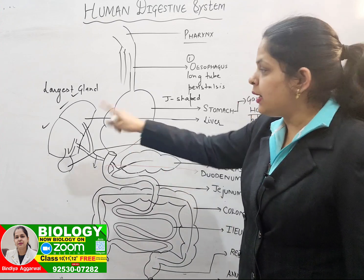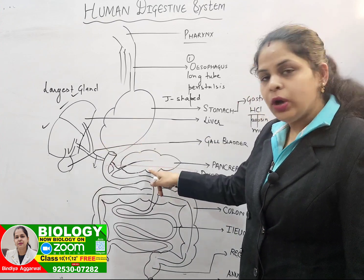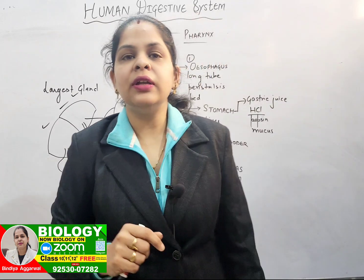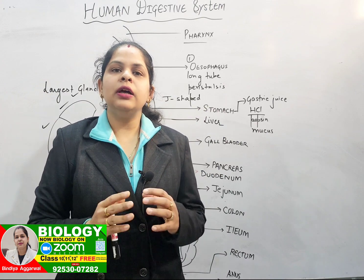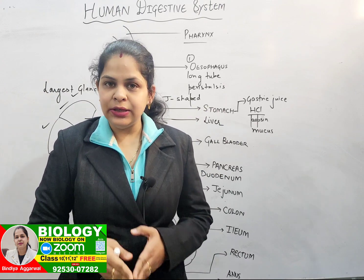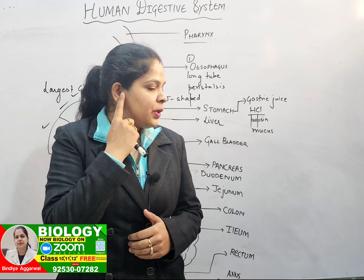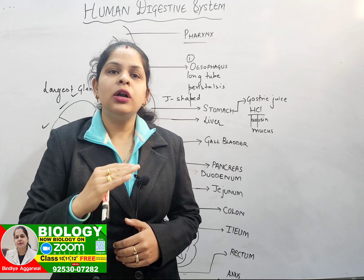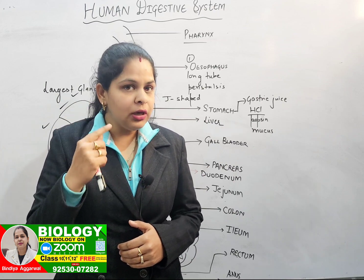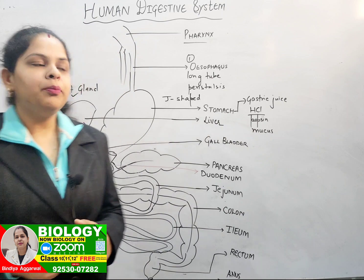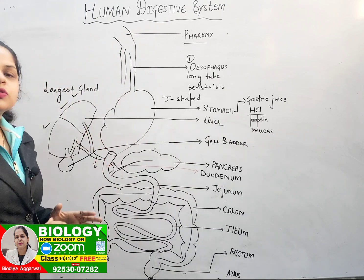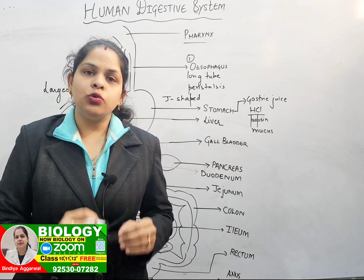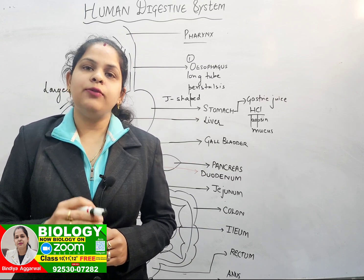There are two major glands: the largest gland is the liver, and the other is the pancreas. Additionally, in the mouth there is the salivary gland. There are three pairs of salivary glands: one is below the ear, one is below the tongue, and one is at the maxillary end. The salivary juice secreted by these glands contains salivary amylase.